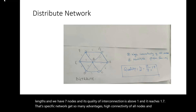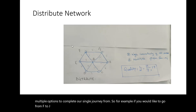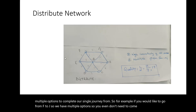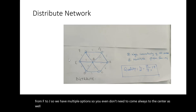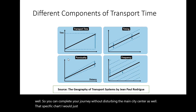The distributed network provides multiple options to complete a single journey from anywhere. For example, if you want to go from F to J, you have multiple options and don't always need to come to the center, so you can complete your journey without creating congestion at a specific point.